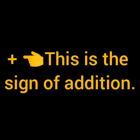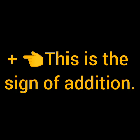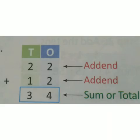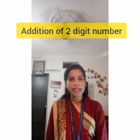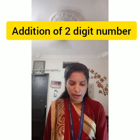Now what is addition? When we put things together we do addition, and this is the sign of addition. Now, numbers that are added are called addends, and the result that we get is called the sum or total. So let us see addition of two digit numbers.